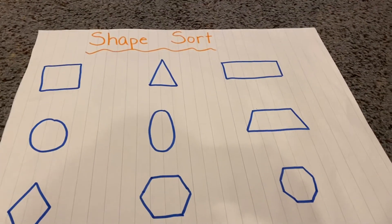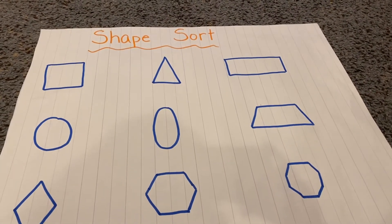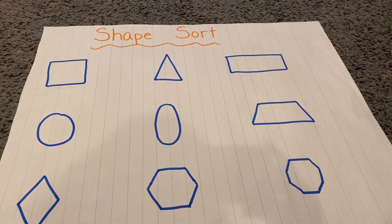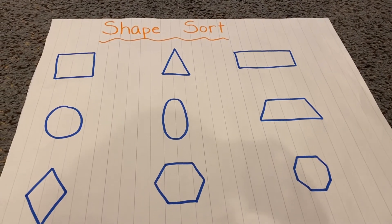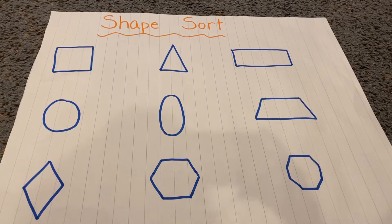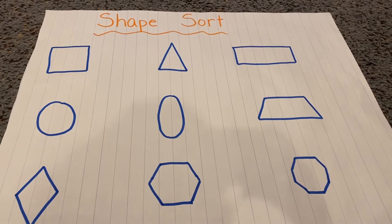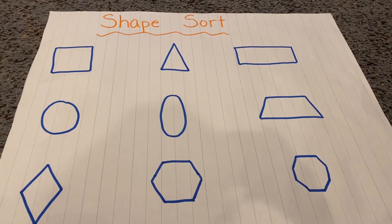Hi monkeys. So this is what I'm talking about — this is what I would like you to do today. This is a shape sort. You don't have to have yours; mine's nice and big so that you could see it. You could do it on any of the paper that I already gave you.